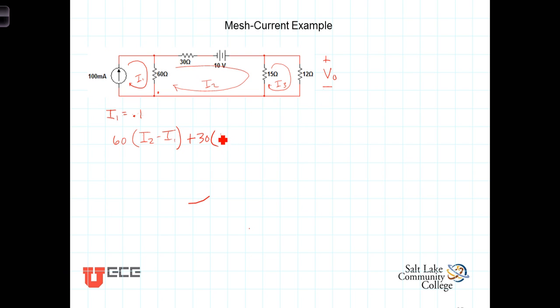Now we have a voltage source here. We're going from minus to plus, that represents a voltage increase, therefore it'll be a minus 10 volts. Coming on down this 15 ohm resistor, we'll have plus 15 times the current in that 15 ohm resistor, where the current is referenced going down because that's the direction we're going. The current going down is i2 minus i3, and that brings us back to where we started, so the sum of those terms equals 0.